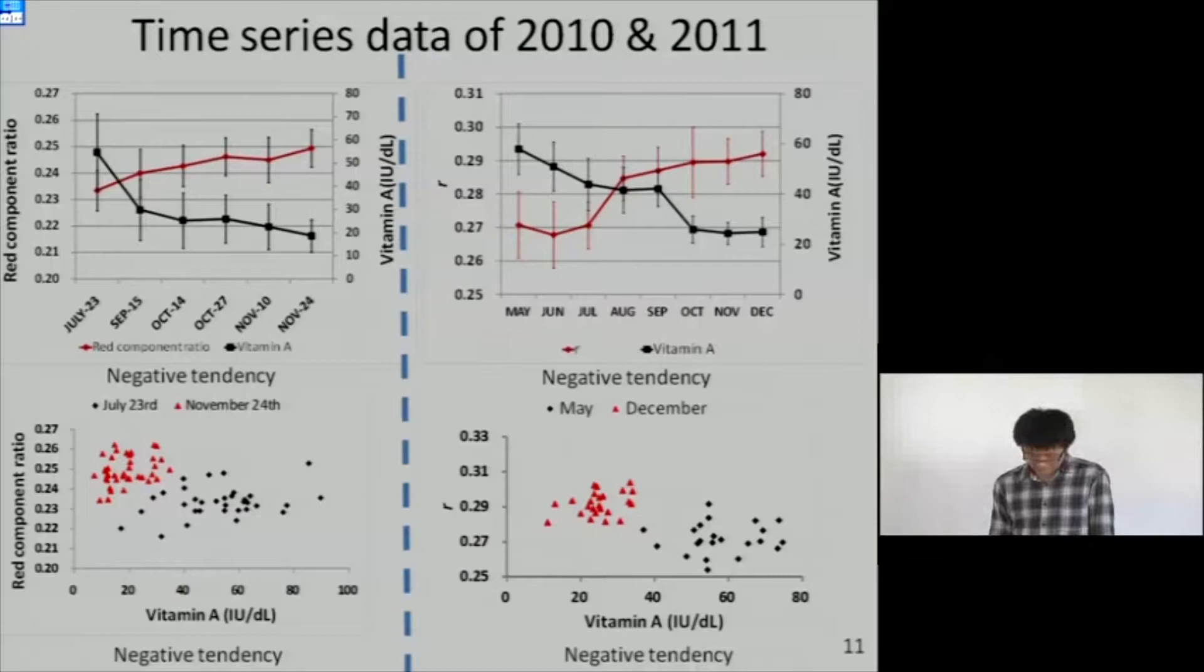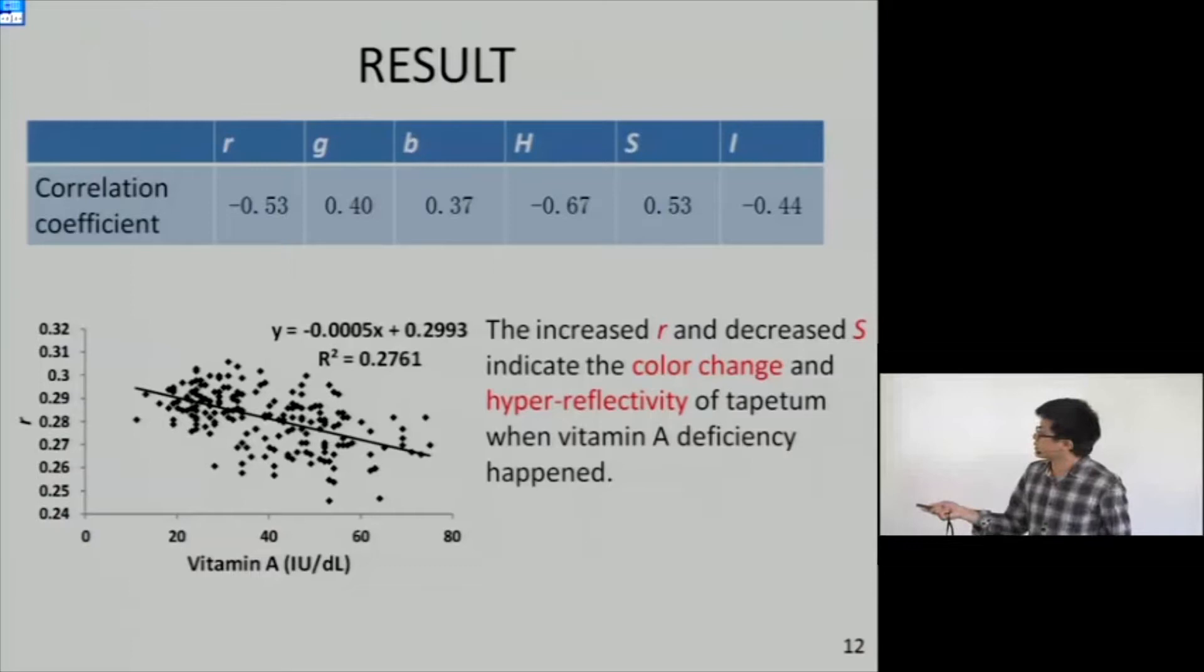The individual correlation coefficient is calculated. It shows that small r and hue value have higher correlation with vitamin A level. The scatter plot also shows this tendency. This can be explained: the increased red component ratio shows color change, and the decreased saturation can indicate the hyper-reflectivity of the tapetum when vitamin A deficiency happens.